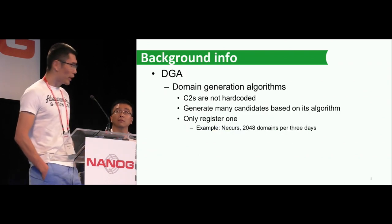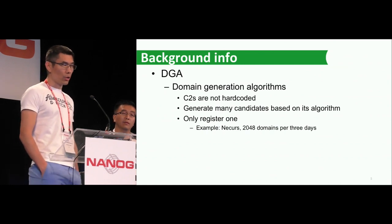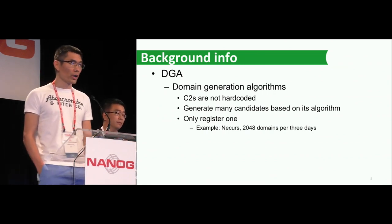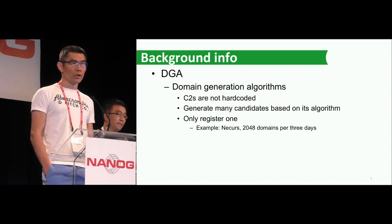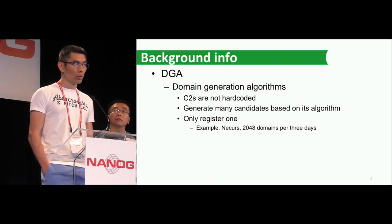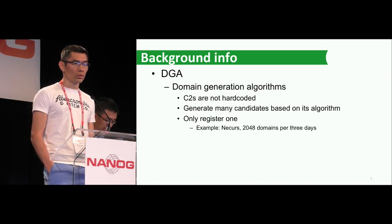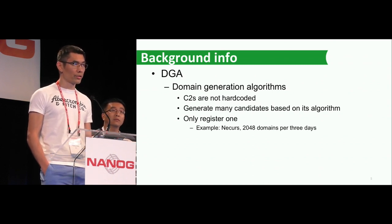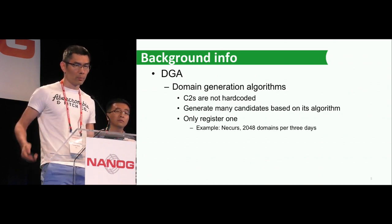DGA stands for Domain Generation Algorithm. By using DGA, the C2 is not hard-coded anymore — C2s are generated by the malware's own algorithm. When we're talking about C2 here, we're talking about not just one C2. Malware can generate a whole bunch of C2s and only register one to use, and that malware will work.